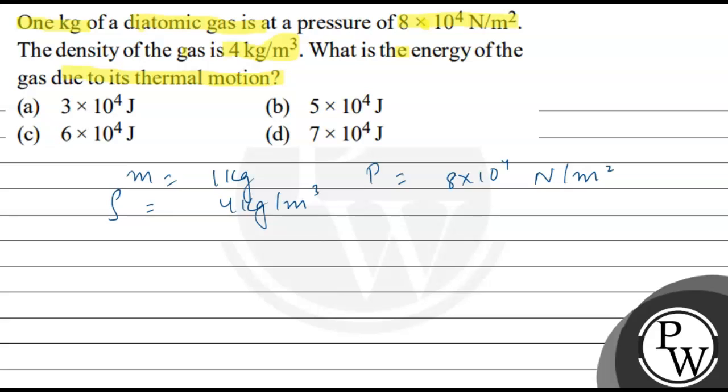First of all, what are the concepts? We know the ideal gas equation. Ideal gas equation is PV is equal to nRT. N number of moles, R gas constant, P pressure, V volume, T temperature.